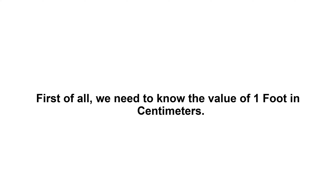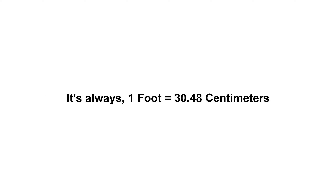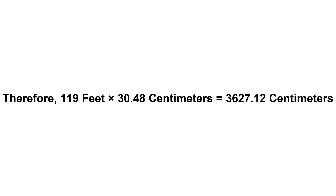119 feet in centimeters. First of all, we need to know the value of one foot in centimeters. It's always one foot equals 30.48 centimeters. Now we have to multiply 30.48 by 119. Therefore, 119 feet times 30.48 centimeters equals 3627.12 centimeters.